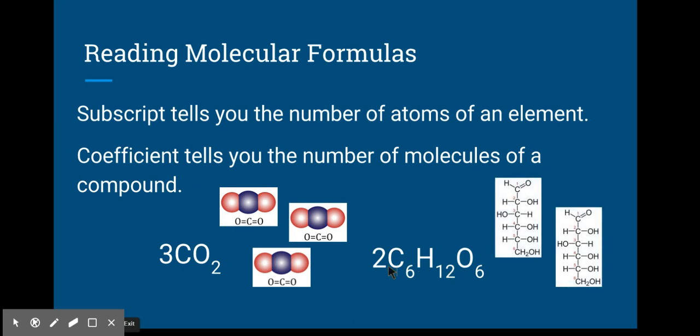So again, here's our other example. We're using glucose again. So C6H12O6, that is how many atoms are in each of these. The number up front, coefficient, tells me that I have two of those molecules.